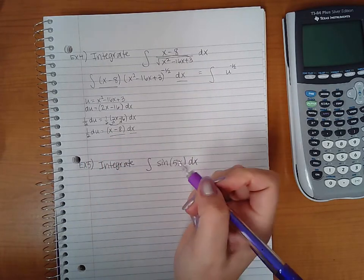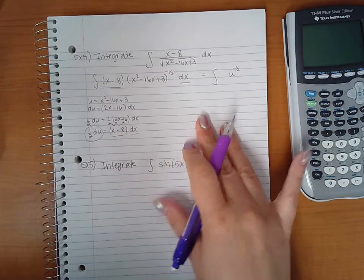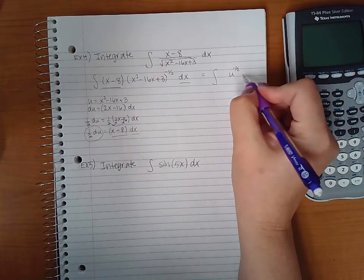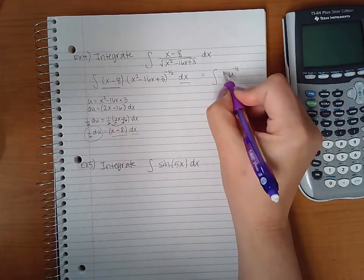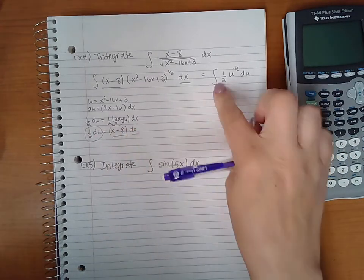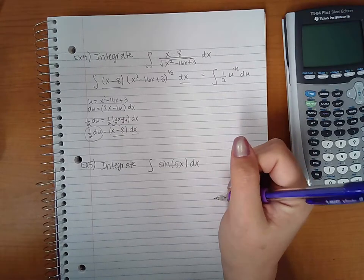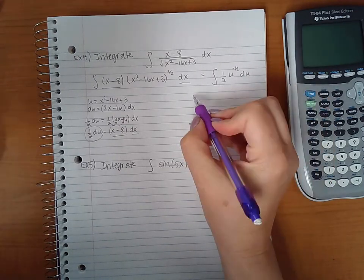Now I do have something to substitute for x minus 8 dx. That will become one half du. You can separate this, putting the multiplier in the front and the du in the back.